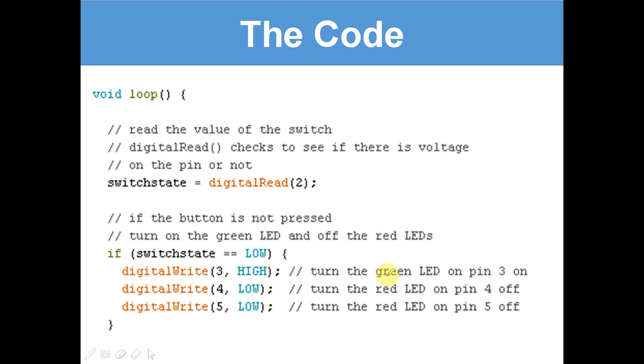Void loop. Void loop runs forever, unlike void setup which runs once. Read the value of the switch. digitalRead checks to see if there's voltage on the pin or not. switchState equals digitalRead 2. That means switchState can either be HIGH or LOW. If digitalRead 2 is HIGH, it means the button is pressed, there's electricity going to pin 2. If it's LOW, it means the button is not pressed.